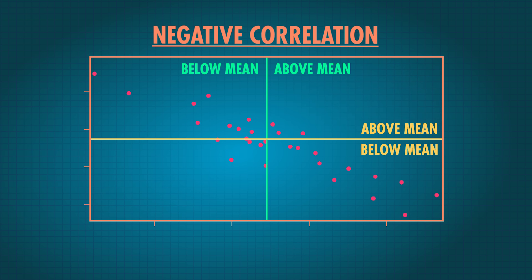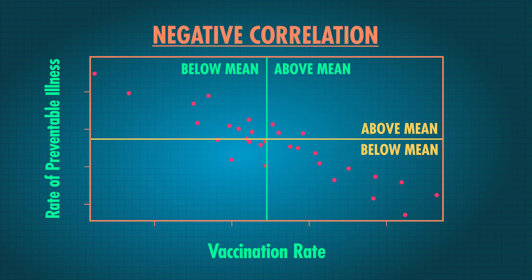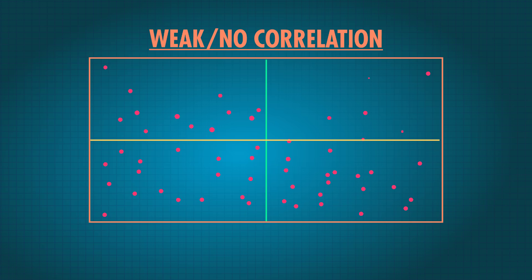The opposite happens when the correlation is negative, like the relationship between vaccination rates and rates of preventable illnesses. Instead of moving together, the variables move in the opposite direction, so the points are mostly in the upper left and lower right quadrants, where either vaccination rate is small and rate of illness is large, or vice versa. The more closely two variables move together, the stronger the relationship will be — positive or negative. If the points are in all of the quadrants pretty evenly, you just have a blob or a cloud — you don't have a strong relationship.